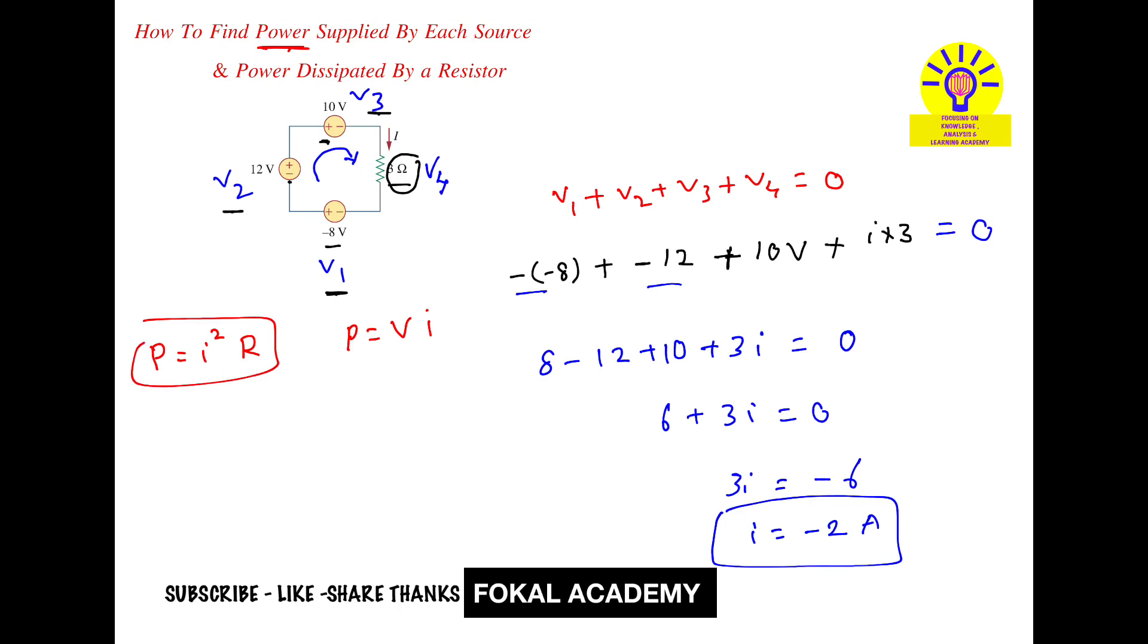First find the power dissipated in the resistor. P equals I squared R, so minus 2 whole squared times 3 Ohms. By simplifying this, we get 12 Watts.